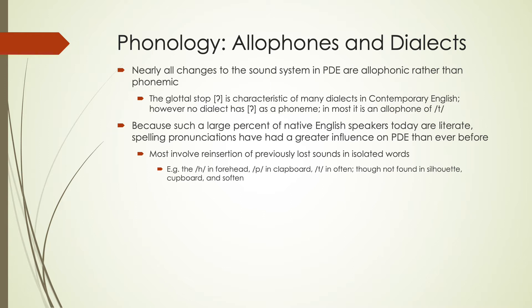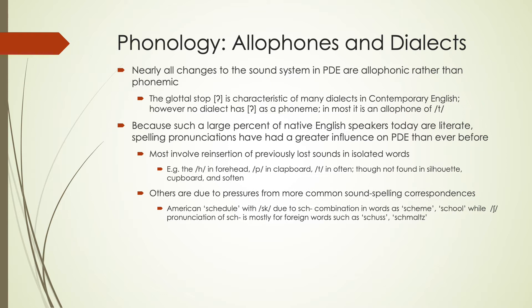In some cases, for things we're more likely to see spelled than spoken, pronunciations may change as a result of interpreting letters as part of the pronunciation. Sometimes it's due to common sound-spelling correspondences. The reason we say 'schedule' with a K sound is because of words like 'scheme' and 'school' that also have an SCH spelling — we use analogy and expectations of similarity. The British pronunciation of 'schedule' is mostly due to influence of foreign words like 'schuss' or 'schmaltz' that use SCH for the sh sound, and SCH was a common spelling in Middle English for that sh sound.